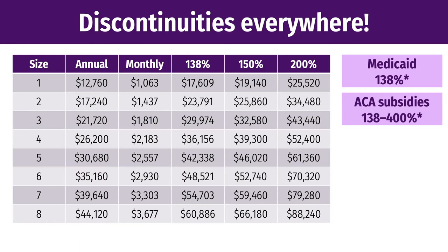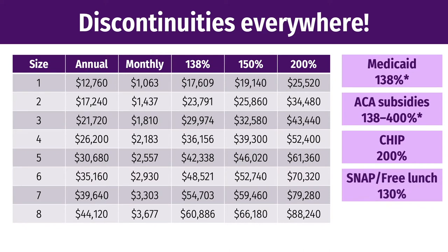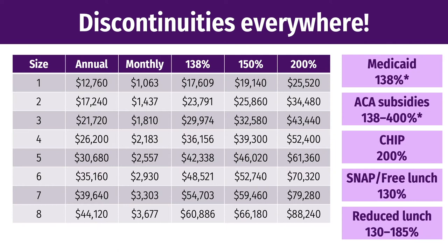To get CHIP — children's health insurance — the threshold is 200% of the poverty level, so if you're at 201% you don't qualify. For reduced-price school lunch, where it's not free but very cheap, you have to have an income between 130% and 185% of the poverty level; above that threshold and you don't qualify. There are a whole bunch of different federal guidelines for a whole host of programs, and these discontinuities exist everywhere.